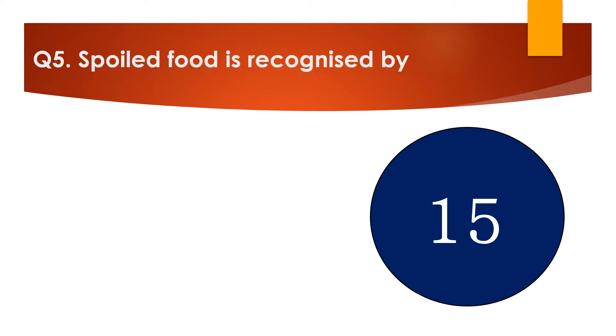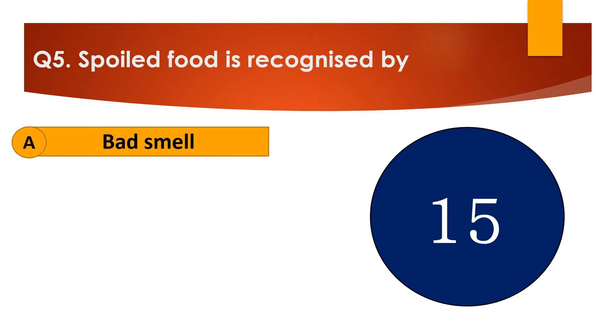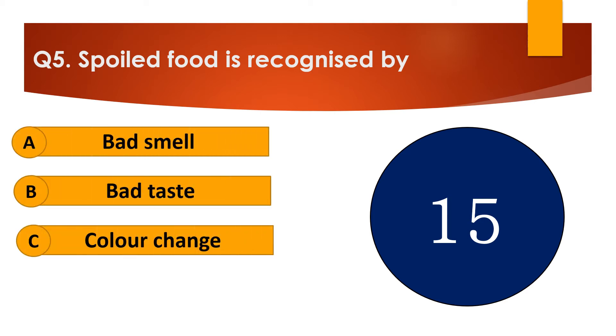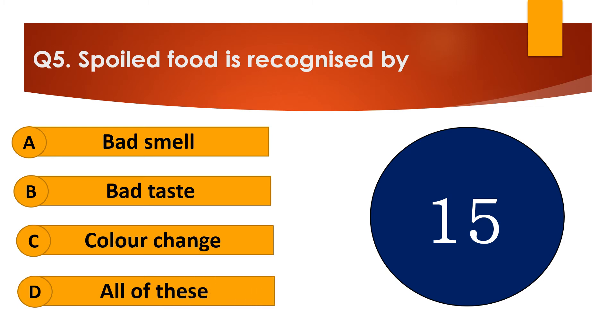Question number 5. Spoiled food is recognized by dash. The options are: A. Bad smell, B. Bad taste, C. Color change, or D. All of these.